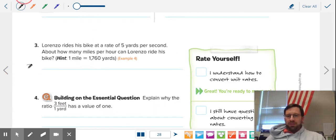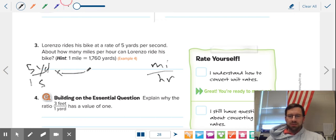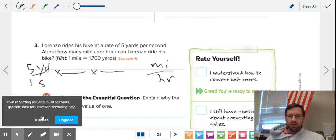So Lorenzo rides his bike at five yards per second. How many miles per hour is this? So now look at this one. We have to go yards to miles and seconds to hours. So we have to do two conversions. Uh-oh. Don't worry. We can do it.